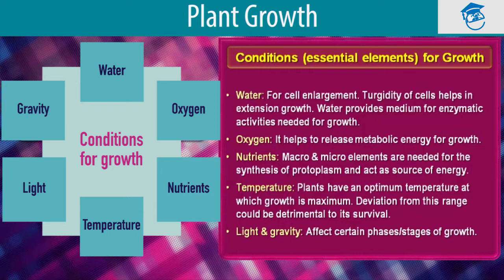Plant cells grow in size by cell enlargement, which in turn requires water. This is the first and foremost factor required for plant growth. Turgidity of cells helps in extension growth. I have already taught you about the cell elongation process in my previous section, so for better understanding you can refer to those presentations to see how turgidity of cells helps in extension growth.